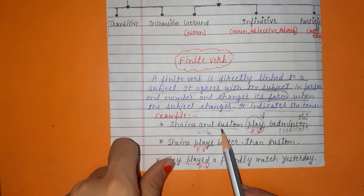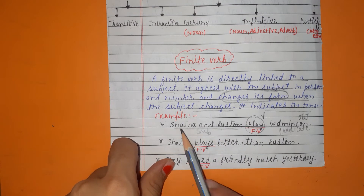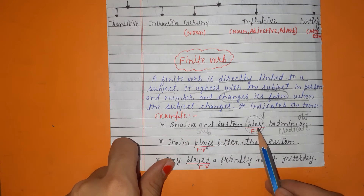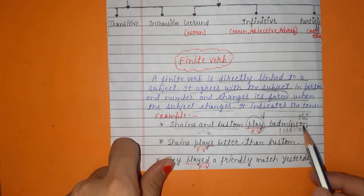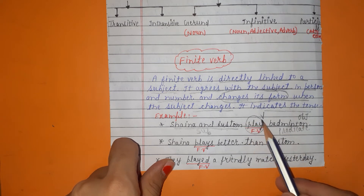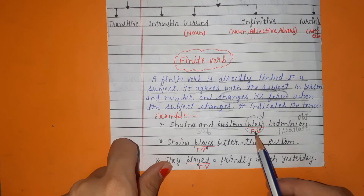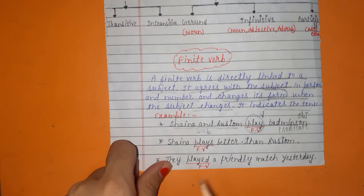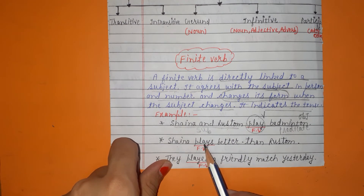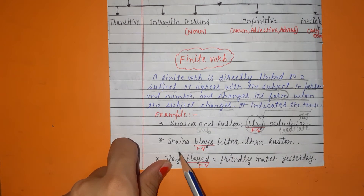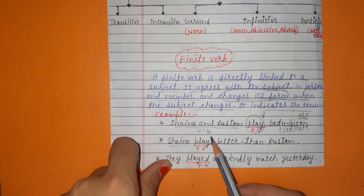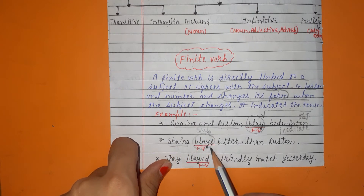Here 'play' is a finite verb. Why is it a finite verb? Because it will change if we change the subject — like 'Shaina plays better than Rustam.' Here we have changed the subject and the verb gets changed to 'plays.' This means the verb is a finite verb.